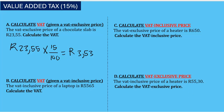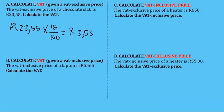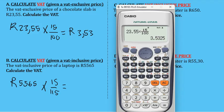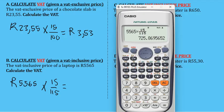Let's move on to B. We are still calculating VAT, but this time given a VAT inclusive price. We're calculating VAT for a laptop that costs R5,565. We multiply by 15 over 115, which gives us R725.87.